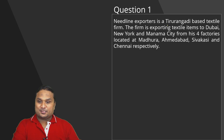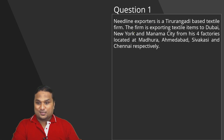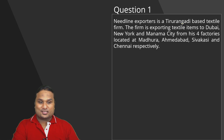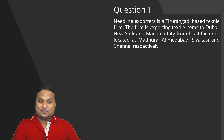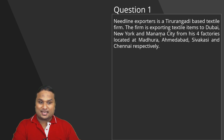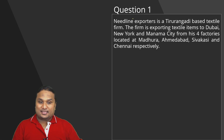This is a story of a famous businessman from Manapuram — he is a textile owner. His name is Mohammad Baba and the name of his firm is Needline Exporters. They are providing garments to the Indian Army. Needline Exporters is a Tirurangadi-based textile firm — a town in Kerala with a significant history in India's freedom struggle. The firm exports textile items to Dubai, New York, and Manama City.